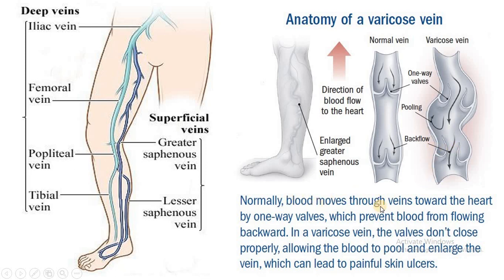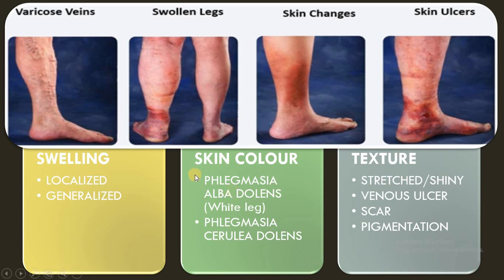Normally, blood moves through veins toward the heart by means of one-way valves, which prevent blood from flowing backward. But in a varicose vein, the valves do not close properly, allowing blood to pool and enlarge the vein, which can lead to painful skin ulcers.